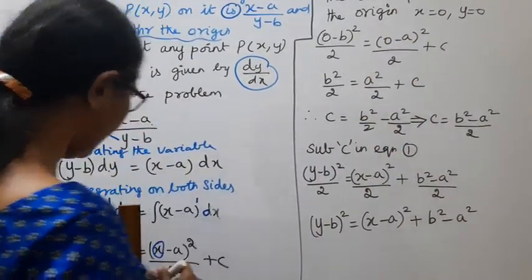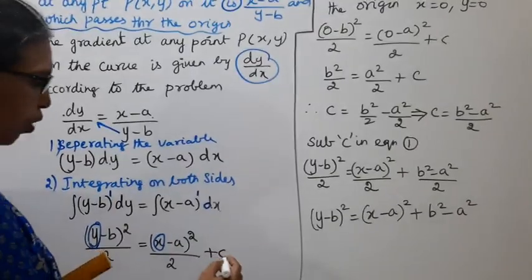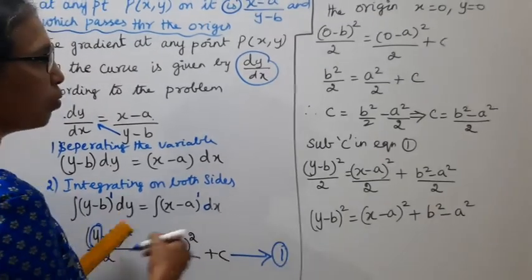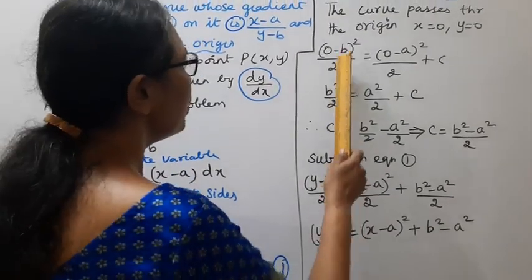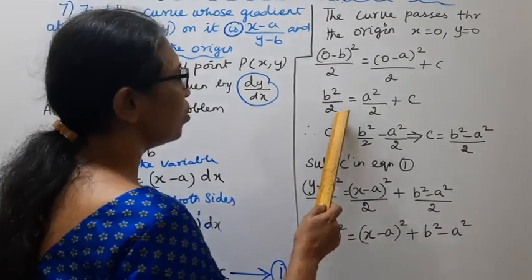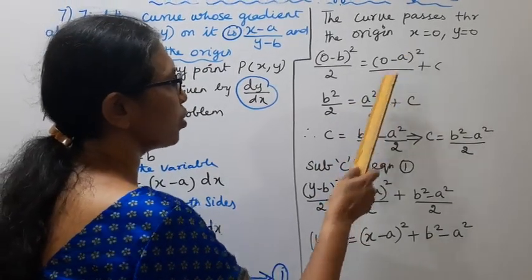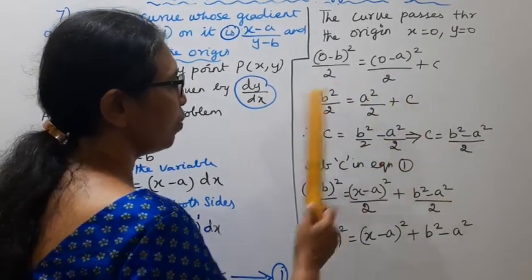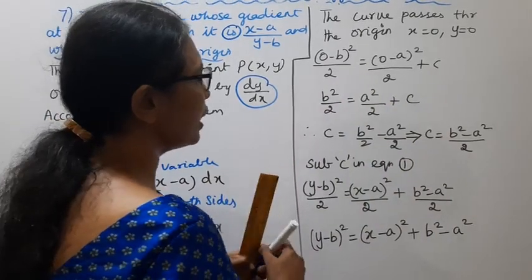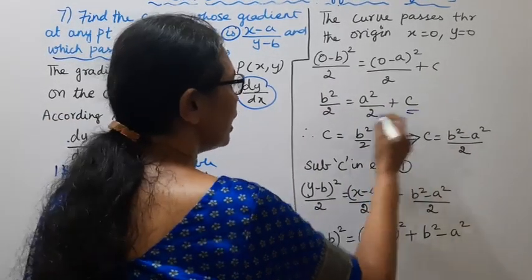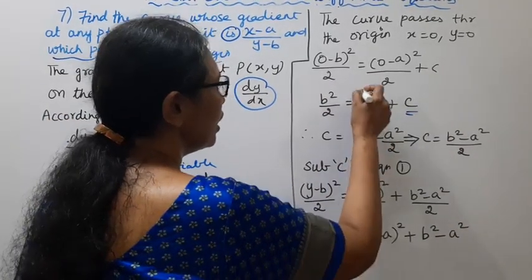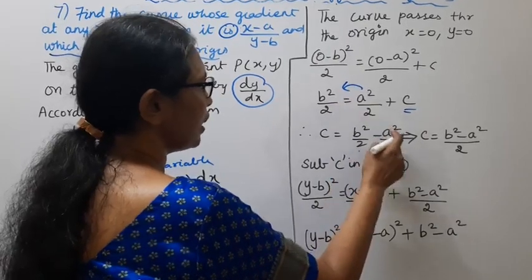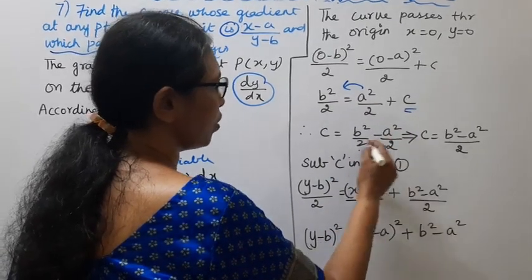Substituting x=0, y=0: (0-b) whole square by 2 equal to (0-a) whole square by 2 plus c. That gives b square by 2 equal to a square by 2 plus c. Therefore, c equal to b square by 2 minus a square by 2.